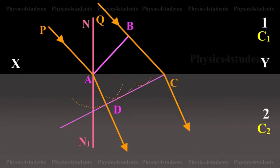Therefore, CD is the refracted plane wavefront and AD is the refracted ray.